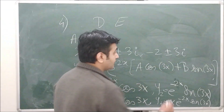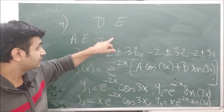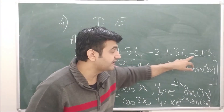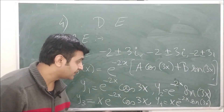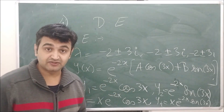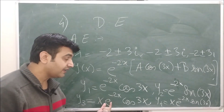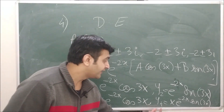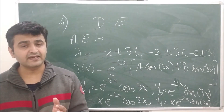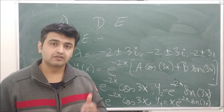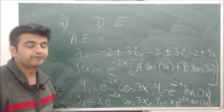If the roots repeat one more time, you have a sixth order differential equation with six linearly independent solutions. y₁ through y₄ remain the same. Then y₅ = x²e^(−2x)cos(3x) and y₆ = x²e^(−2x)sin(3x). The pattern is clear: you simply multiply by increasing powers of x to generate additional linearly independent solutions whenever roots repeat.